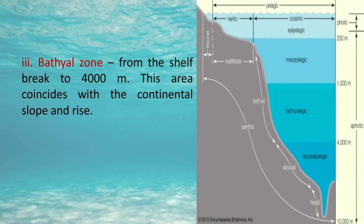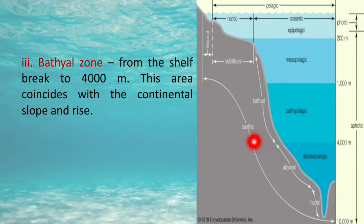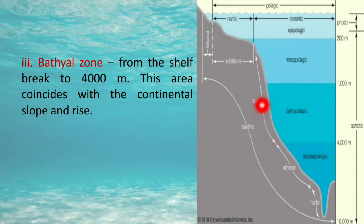The third zone is the bathyal zone, extending from the shelf break to 4,000 meters depth. This zone coincides with the continental slope and continental rise. So the sublittoral zone goes from the lowest low tide to the shelf break at around 200 meters deep, coinciding with the continental shelf, while the bathyal zone reaches down to 4,000 meters depth.